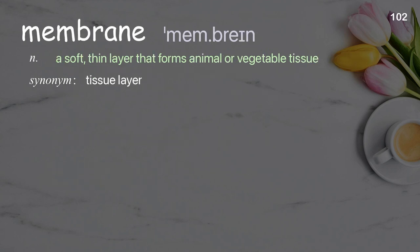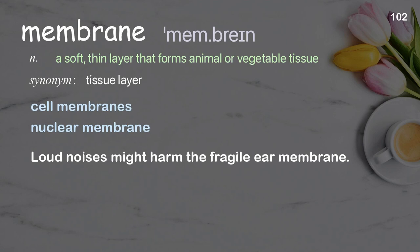Membrane. A soft, thin layer that forms animal or vegetable tissue. Examples: cell membranes, nuclear membrane. Loud noises might harm the fragile ear membrane.